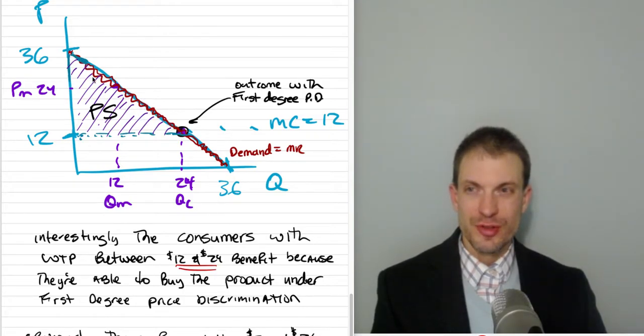So you produce 24 units. The first unit sold by this monopolist would go for right around $36. The last unit sold would go for right around $12.